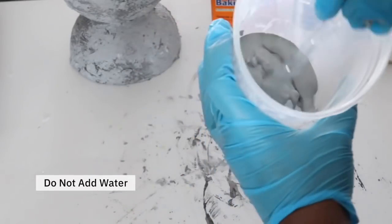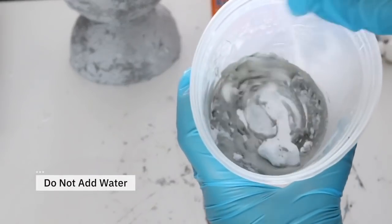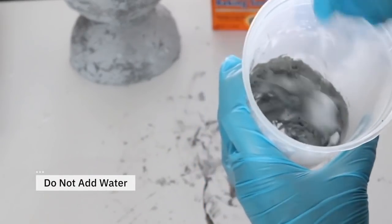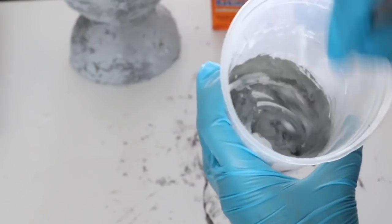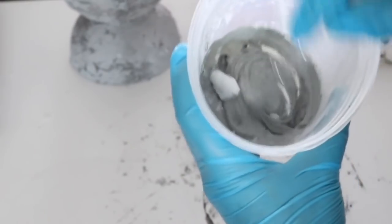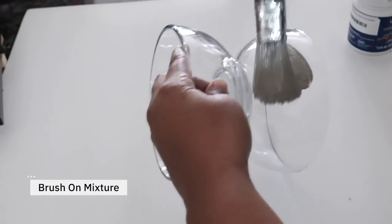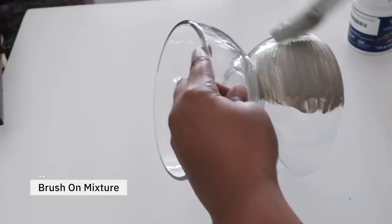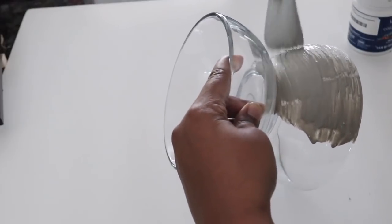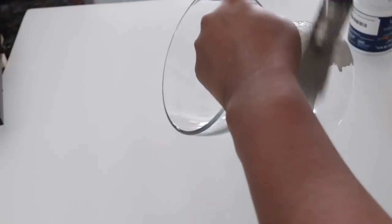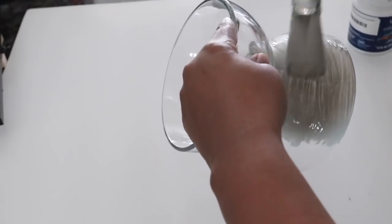So what I'm going to do is just stir it up and just see if I need to add any more baking soda or paint just to give it a thick consistency. I do not have like a measurement or anything, I'm just winging it. So after you get the consistency that you want, it's like a thick paint.